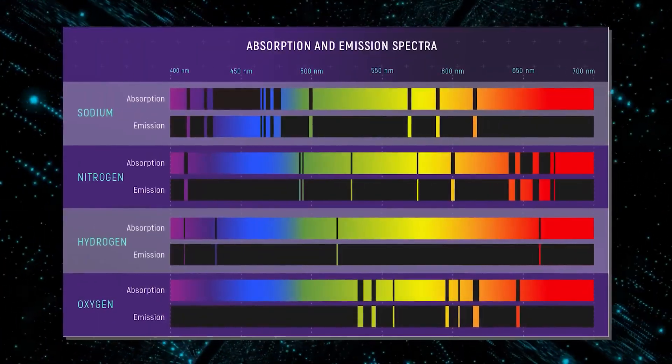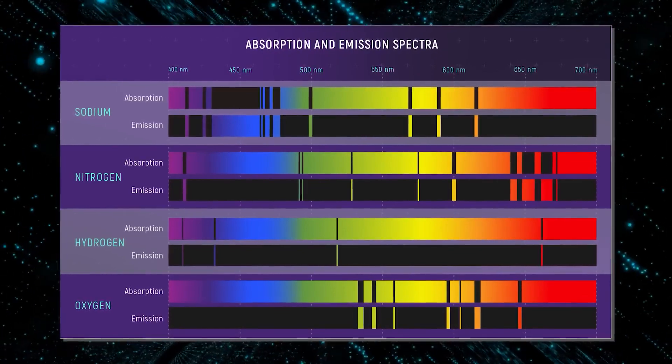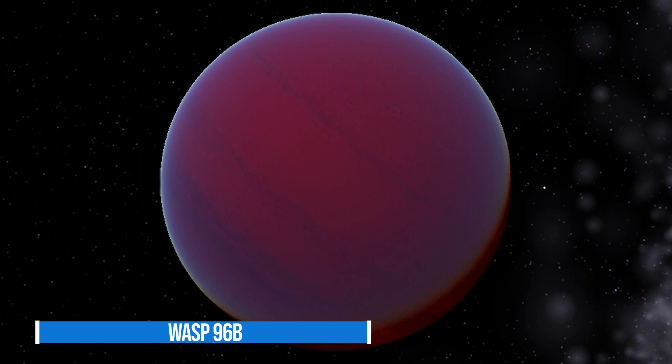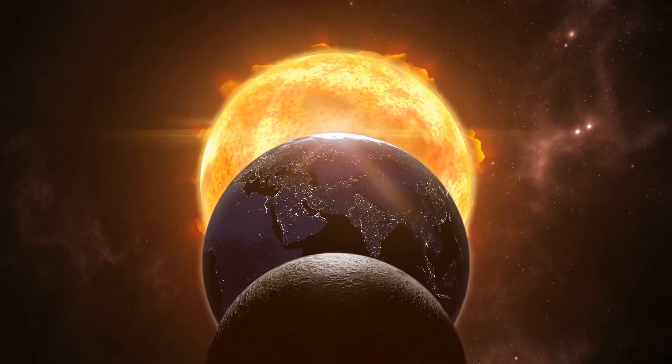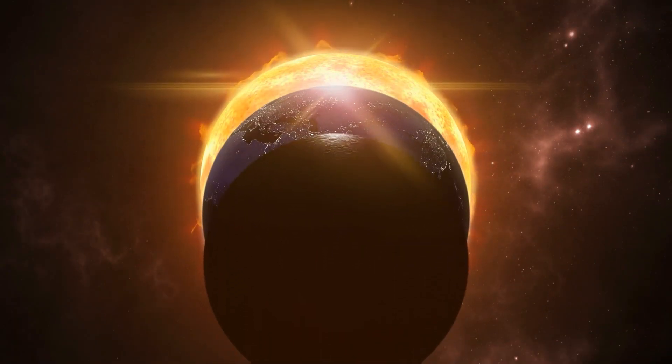The blue light on the graph represents a best fit model that takes into account the data, the known properties of WASP-96b, and its star-like size, mass, and temperature, and assumed characteristics of the atmosphere. In short, a lot of questions are going to be answered.